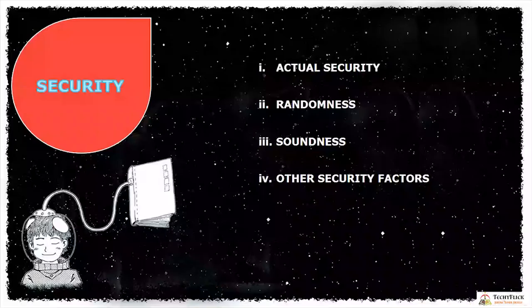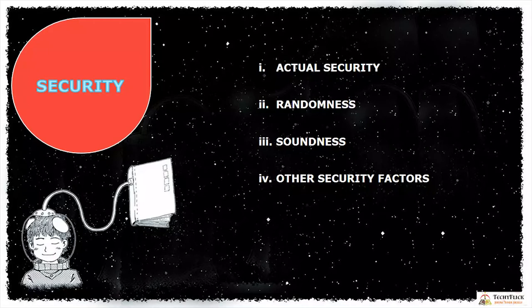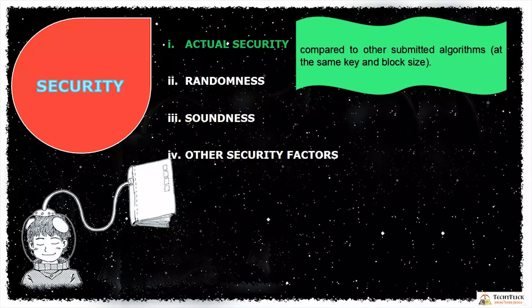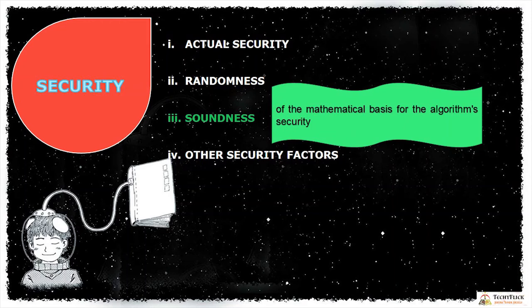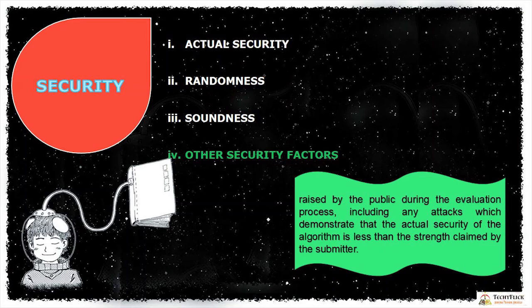The security criteria include: actual security — compared to other submitted algorithms in terms of key size and block size; randomness — the extent to which the algorithm output is indistinguishable from a random permutation on the input block; soundness — the mathematical basis for the algorithm's security; and other security factors raised by the public during the evaluation process, including any attacks.